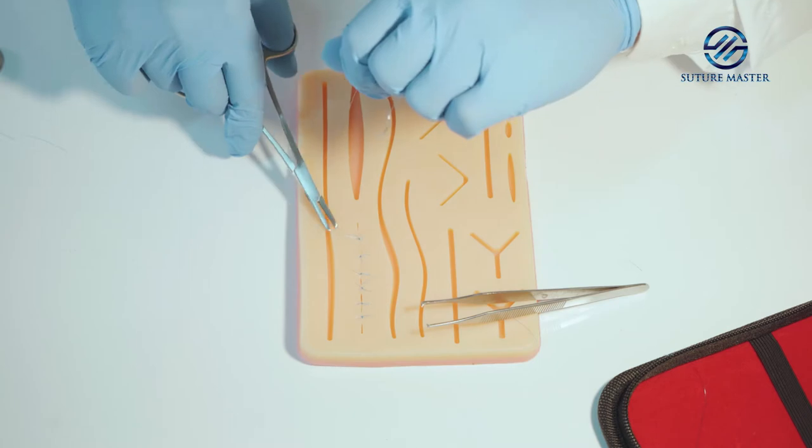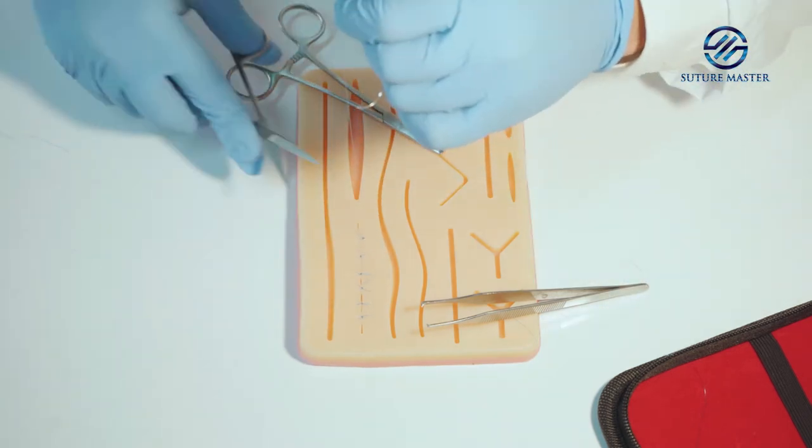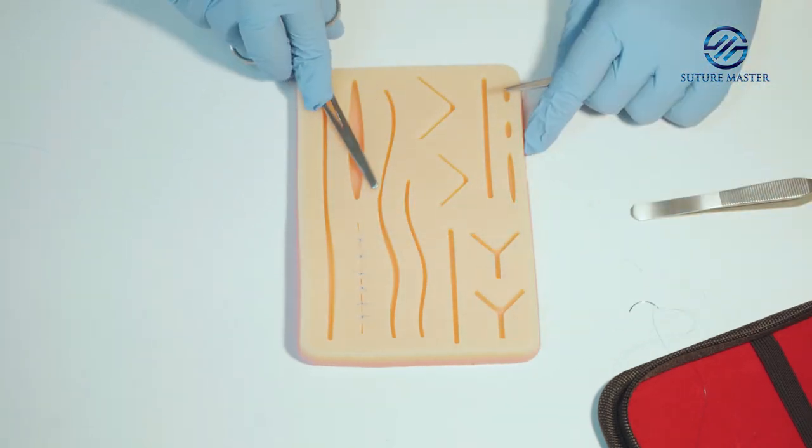Once the knot is tied, use the needle holder to pull the knot to one side so it's not overlying the wound.